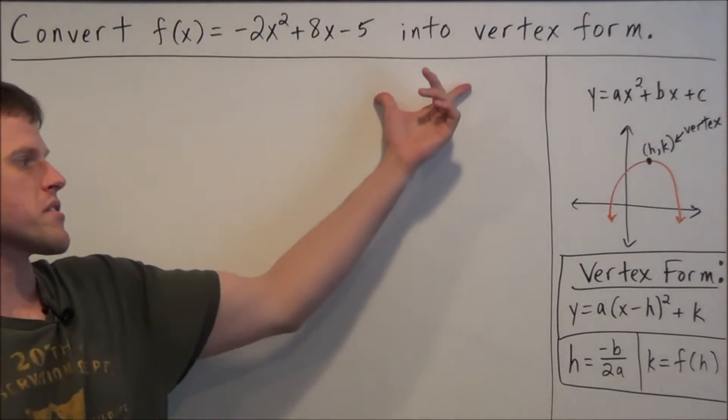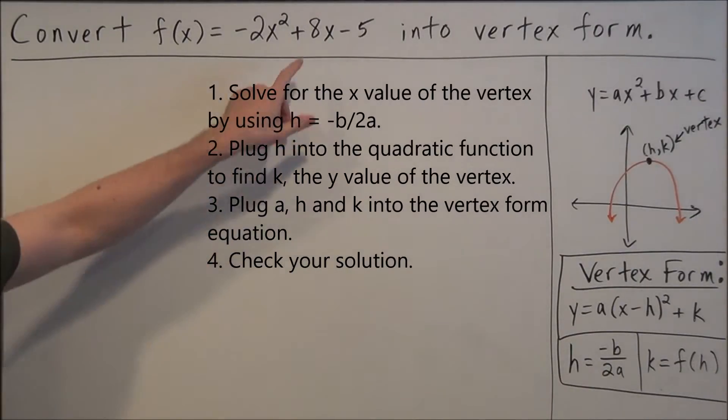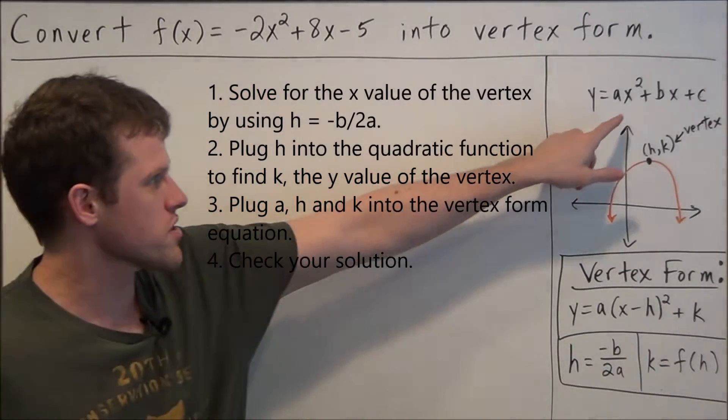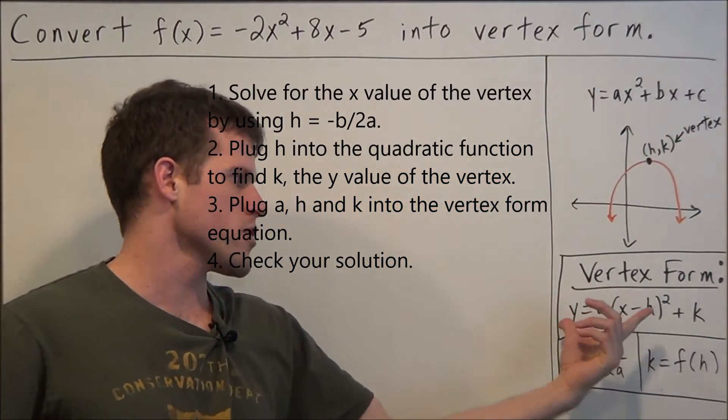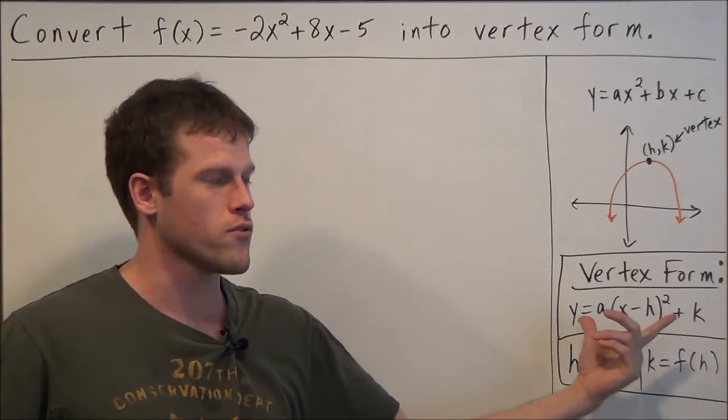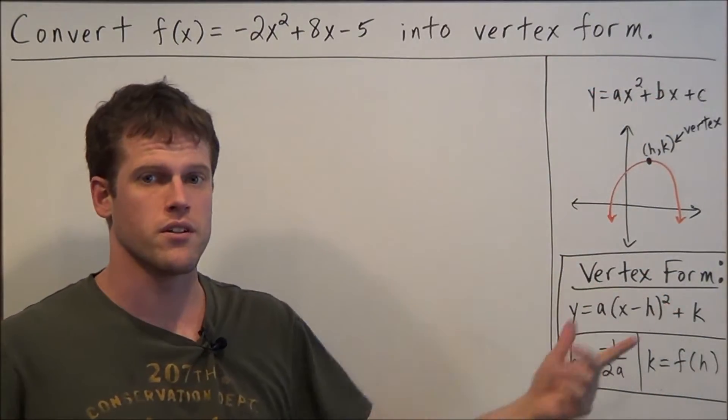Now to complete this problem we can break this down into a few simple steps. But basically what we're doing is we're starting off with a quadratic equation in standard form, ax squared plus bx plus c, and we want to make use of this equation here for vertex form and transform the original equation into this form here.